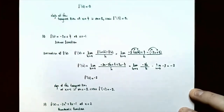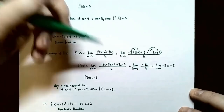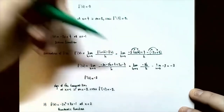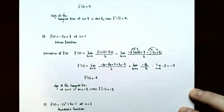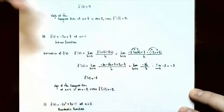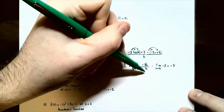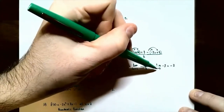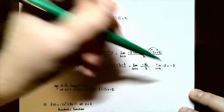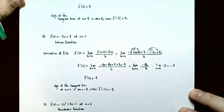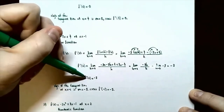Notice several terms cancel out — this is very common with the difference quotient. Negative 3x plus 3x is 0, and 4 subtract 4 is 0. The only term left is negative 3h. It has an h in common with the denominator, so cancel the h's, leaving negative 3. The limit as h approaches 0 of negative 3 is just negative 3, since the limit of a constant is that constant. So f prime of x equals negative 3.